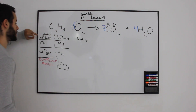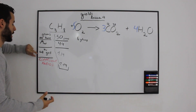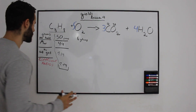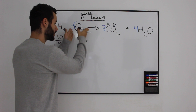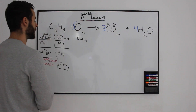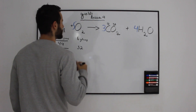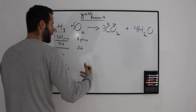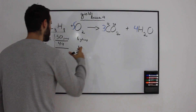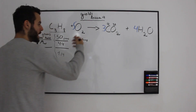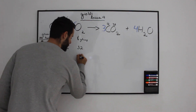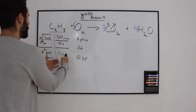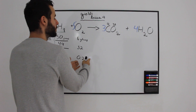We are going to use the table from the previous video: grams we actually have, molecular weight, the number of moles converting grams to moles, and the coefficient ratios. We take 8 grams of oxygen and fill the entire table. The atomic mass of oxygen is 16, and 16 times 2 is 32. The grams we have divided by the molecular weight gives us the number of moles, so 8 divided by 32 is 0.25 moles.